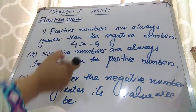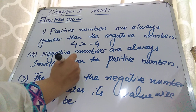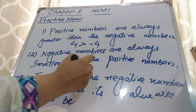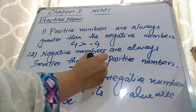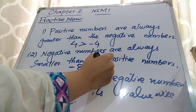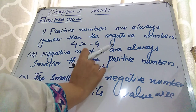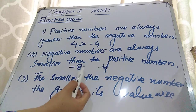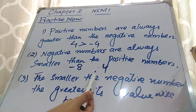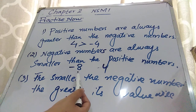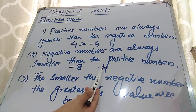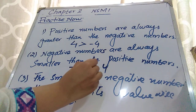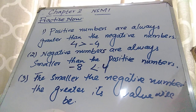Negative numbers are always smaller than positive numbers. So when we write minus 8 and 4, you will not write greater than — you will put the sign of smaller than, because negative numbers are always smaller than positive numbers.